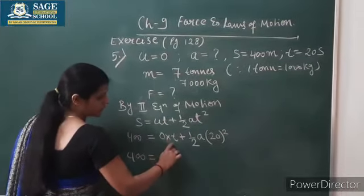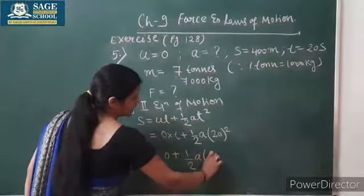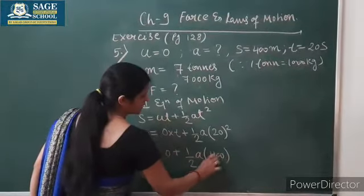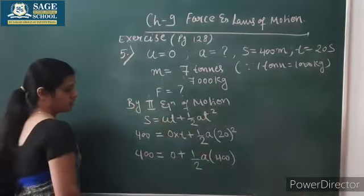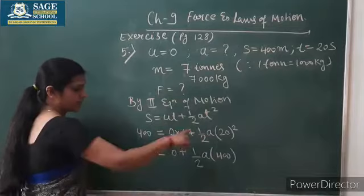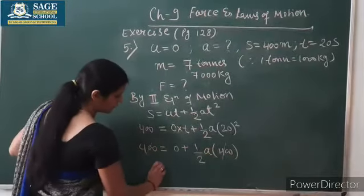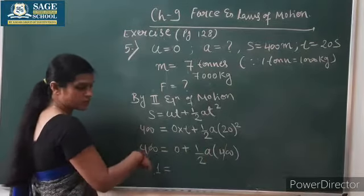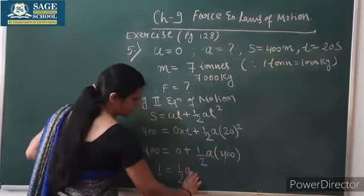400 equals it becomes 0 plus 1/2 a, it is coming as 400 as 20². Now what we can do, either directly cancel this 400 by this 400. So from here 1 = 1/2 a.